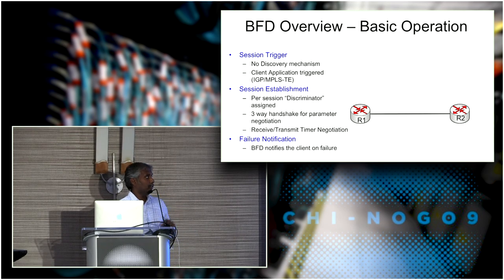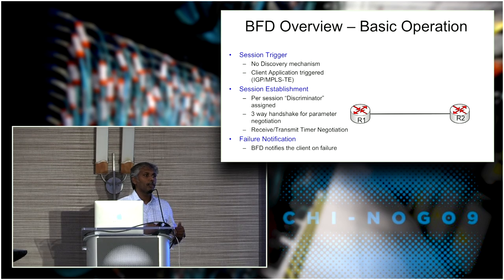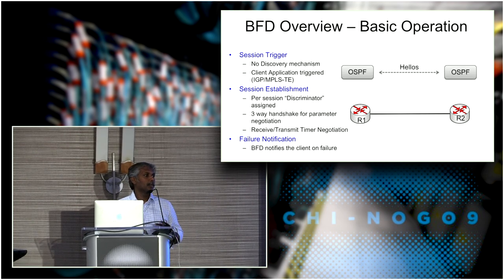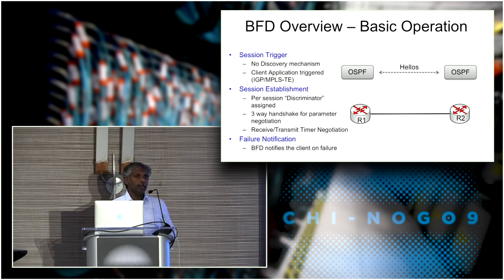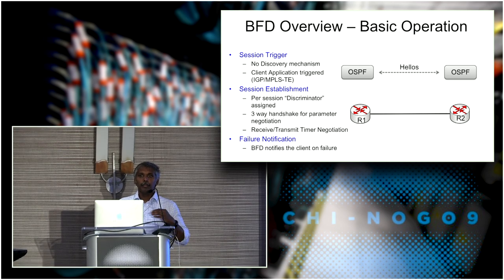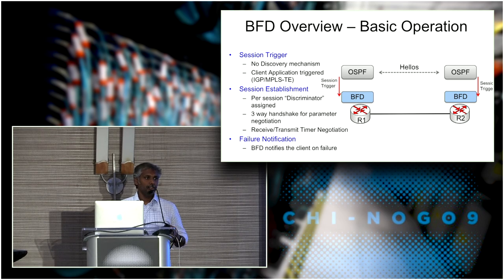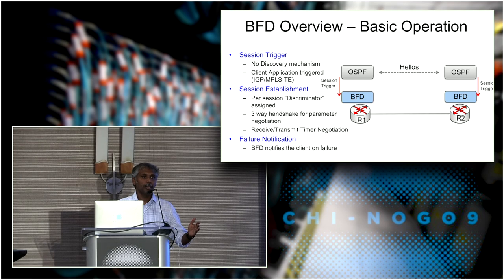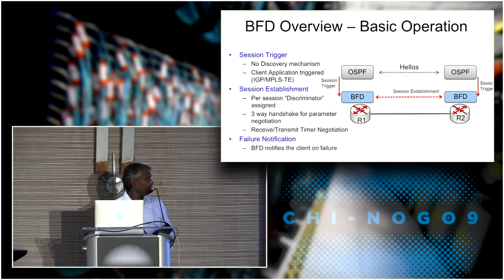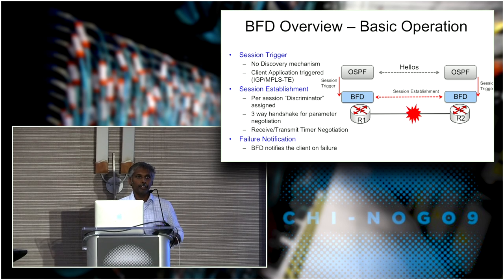The basic operation comprises three simple steps. First is triggering the session. Unlike IGP protocols which dynamically discover neighbors, BFD uses a client subscription-based approach. For example, OSPF acts as the client — it exchanges hellos, brings up adjacency with neighbors, and once up, registers with BFD. BFD waits for a client to register; once OSPF registers and provides the set of neighbors, it asks BFD to perform monitoring on its behalf. The next step is BFD establishing the session through a three-way handshake, negotiating discriminators and intervals.